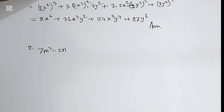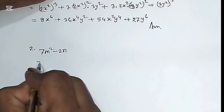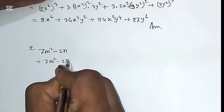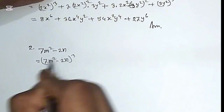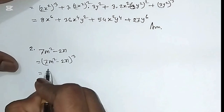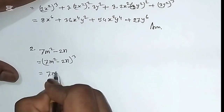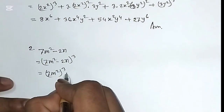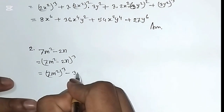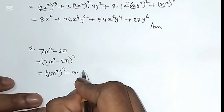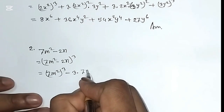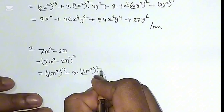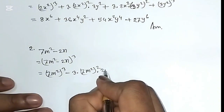Question number 2: (7m² - 2n)³. Here a is 7m² and b is 2n. Applying the (a - b)³ formula: a cube means (7m²)³ minus 3 into a squared, which is (7m²)², into b, which is 2n...